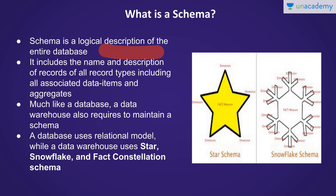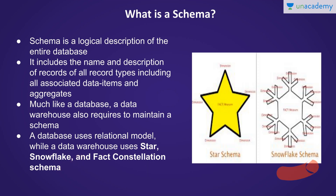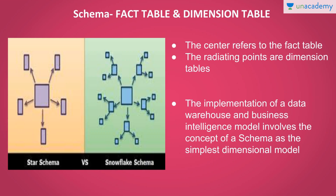This schema includes the name and description of all the records present in the database — all the data items, all the attributes, and sub-attributes. The same way we maintain a database, we need to maintain a schema. A normal database uses a relational model, but a data warehouse uses three types of schema: a star schema, a snowflake schema, and a fact constellation schema.